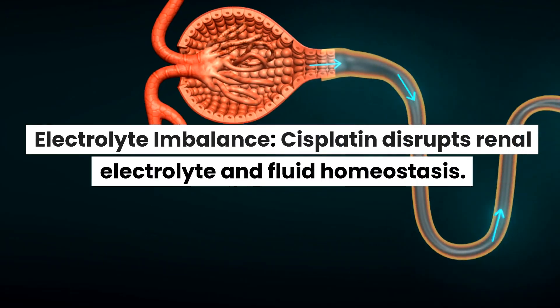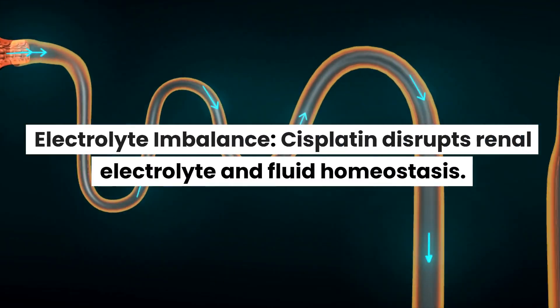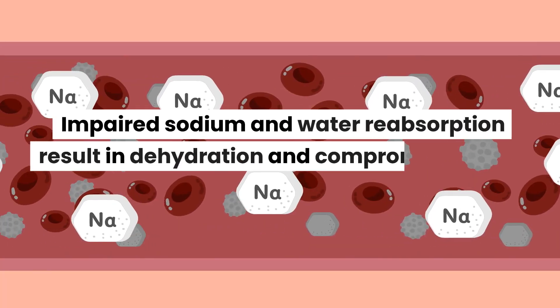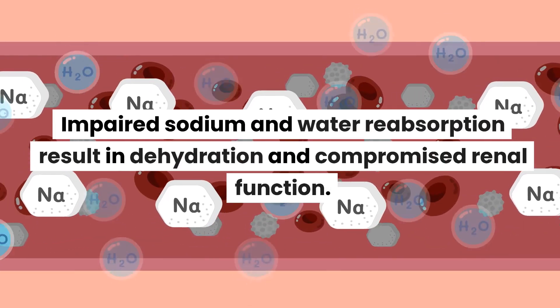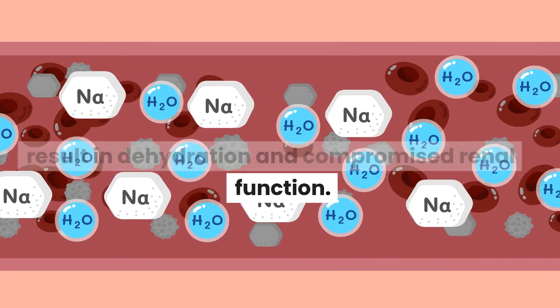Electrolyte imbalance. Cisplatin disrupts renal electrolyte and fluid homeostasis. Impaired sodium and water reabsorption result in dehydration and compromised renal function.